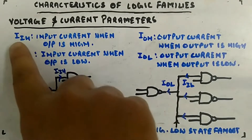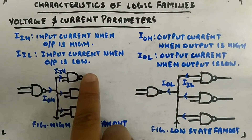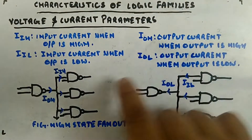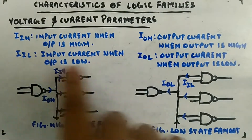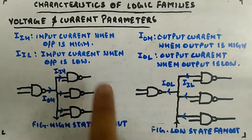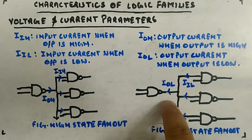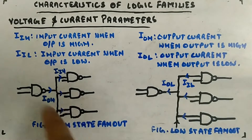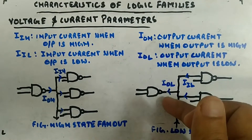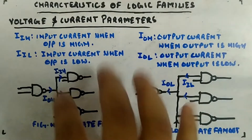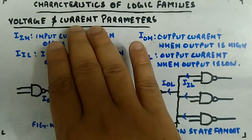IIH is going inside the gate and IOH is going out of the gate — that is how high-state fan-out is defined. For the low state, IOL and IIL go in the other direction because the output is low. The output is low so it will drain current out of all the connected gates, whereas when the output is high it provides current to the other gates.